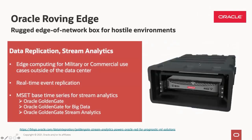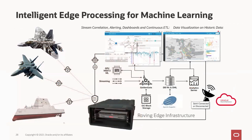There is also a new edge computing use case where Oracle Stream Analytics can be deployed using the Oracle Roving Edge appliance. The architecture is similar, with the difference that it uses GPU-based M-set 2 machine learning algorithms in one of the stages. The edge device processes the data and then sends it into OCI Cloud as a semi-connected or disconnected integration.